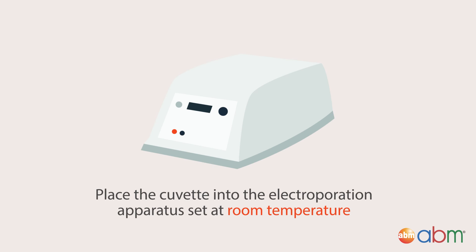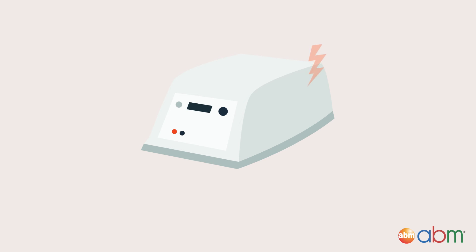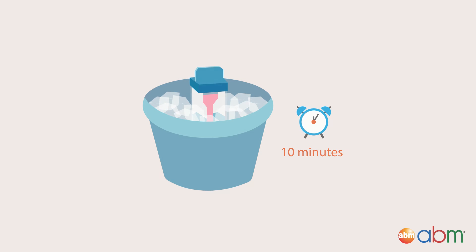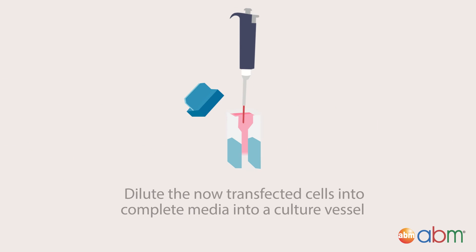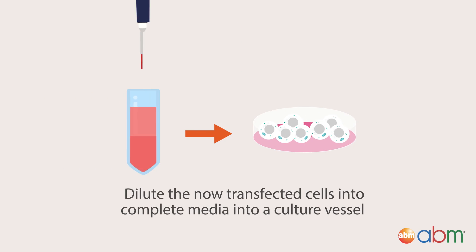Place the cuvette into the electroporation apparatus at room temperature, then zap using electrical pulses one or more times at desired voltage settings. Then place the cuvette with the cells and DNA in ice for another 10 minutes. Dilute the now transfected cells into complete media into the culture vessel.